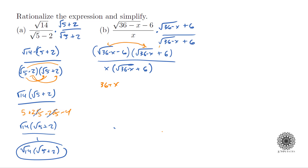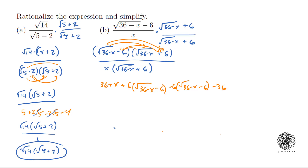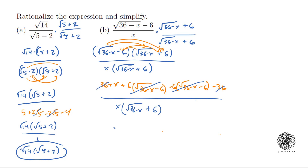When I multiply the outside terms I get plus 6 times the square root of 36 minus x, and on the inside I get minus 6 times the square root of 36 minus x. Those two ugly middle terms actually subtract each other out. Lastly I have a negative 36, all over x times the square root of 36 minus x plus 6. So in the numerator, the two middle terms cancel, and I have a 36 and a minus 36.